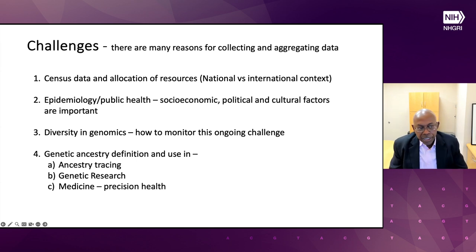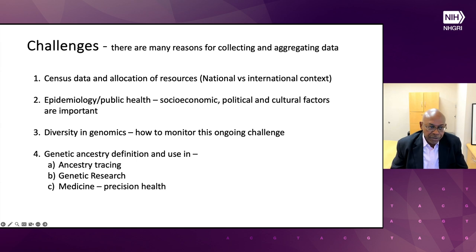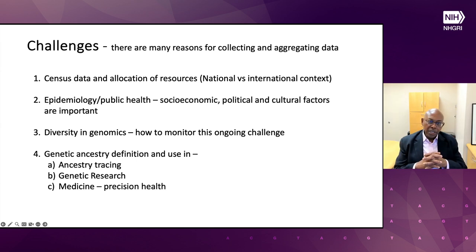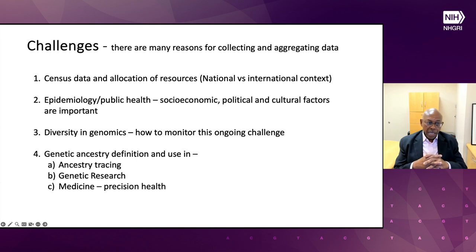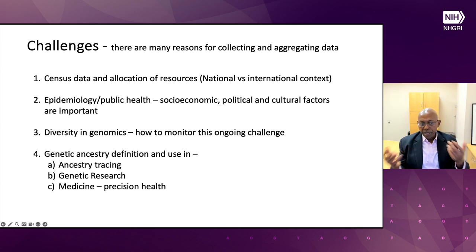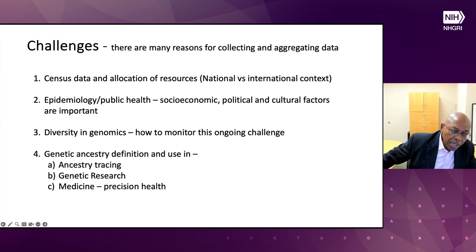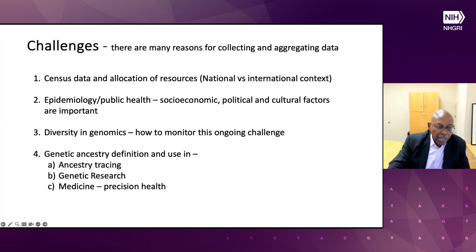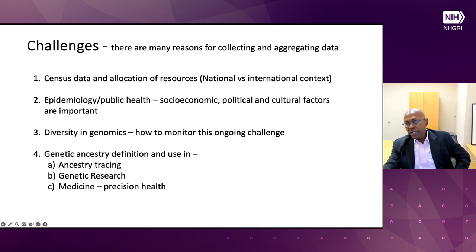Data is collected and aggregated for census purposes — to know the number of people in a country and allocate resources. Sometimes we want to understand social determinants of health, especially for those interested in health disparity, so context becomes very important. How do we properly aggregate people to capture those influences? And how do we monitor diversity in genomics to engage everybody? There's also genetic ancestry — tracing our own ancestry, doing genetic research, and medicine. Medicine is really interesting because it is a sample size of one. You are not treating a group; you are treating an individual in front of you.